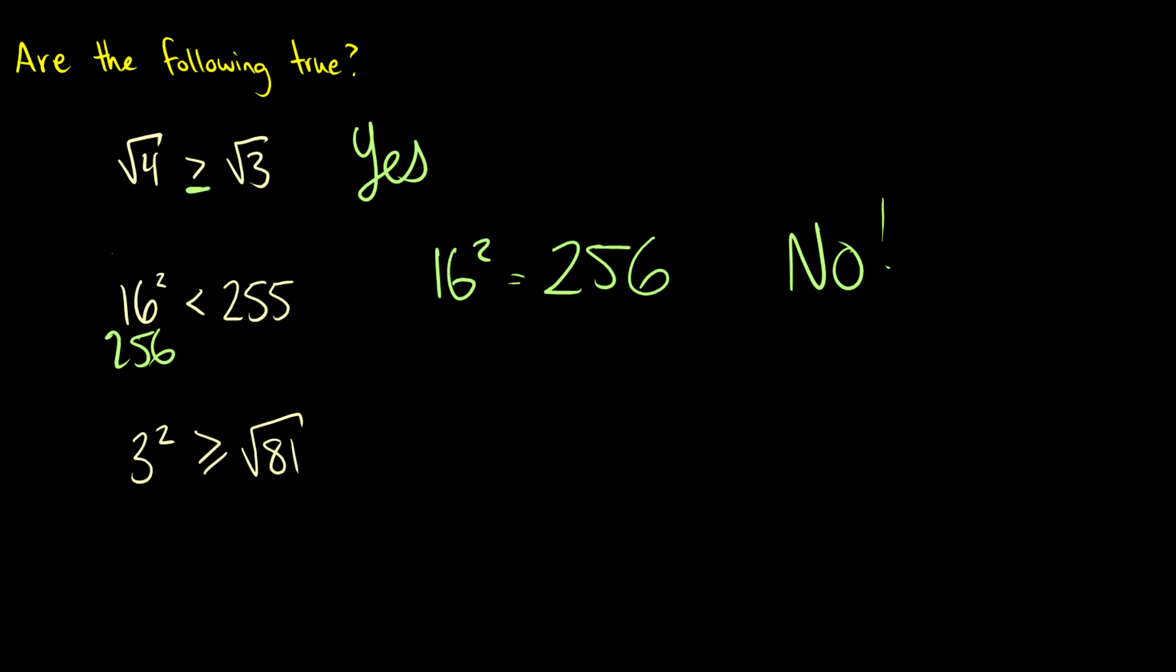What about this one? In fact, what about this sign? What does this greater than with a bar under it mean? Well this is greater than or equal. So if 3 squared is greater than square root of 81 or if 3 squared is equal to the root of 81 then it's true.